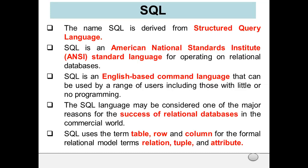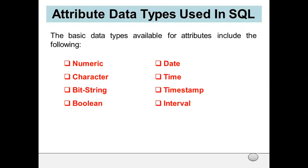In SQL, the terms table, row, and column are used for the formal relational model terms relation, tuple, and attribute. That means in SQL, table is called relation, row is known as tuple, and column is called attribute. Now, what are the data types used in SQL? The basic data types are numeric, character, bit string, boolean, date, time, timestamp, and interval.